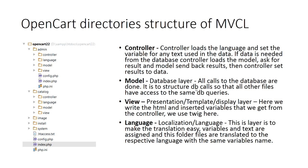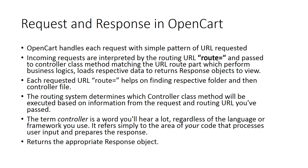OpenCart handles each request with a simple pattern. For every incoming request, the URL route is interpreted and passed to the controller class method matching the URL route, which performs business logic, loads respective data, and returns a response object to the view. Each requested URL route helps find the respective folders, controller files, and methods. The routing system determines which controller class methods will be executed based on information from the request and routing URLs. The controller refers to the area of your code that processes user inputs and prepares the response.